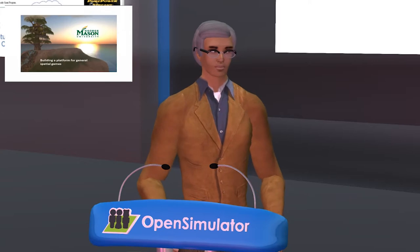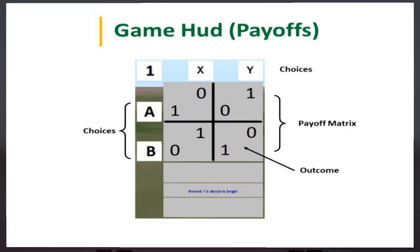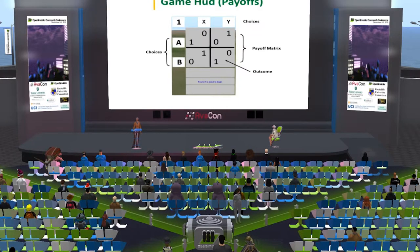The first step in the package is to design the game using a HUD. You design the payoffs directly on the HUD and they're placed into a payoff matrix. In the example shown, there are two players: one chooses X or Y, the other chooses A or B — a standard normal form game. Once they make their choices, the outcome determines payoffs. The bottom-left payoff goes to the row player and the top-right to the column player.